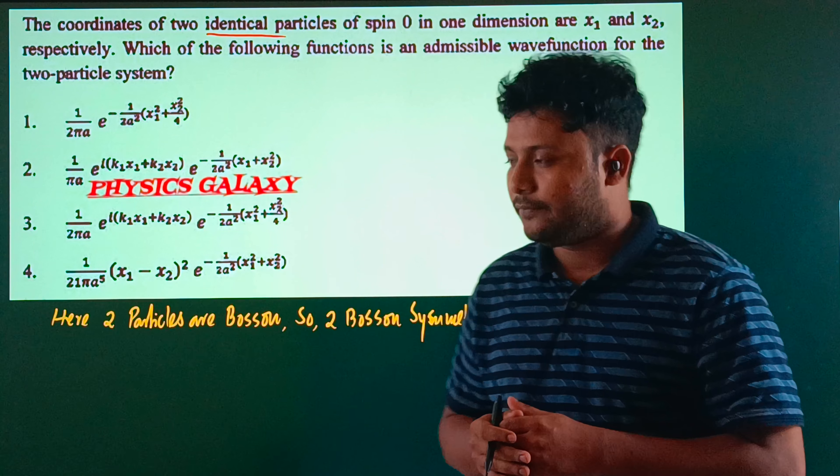Boson wave functions must be symmetric, so the two-boson combined system should be symmetric. Options 1, 2, and 3 are all symmetric. Now let's check option 4: ψ(x1,x2) = 1/(21πa³) (x1-x2)² exp[-(x1²+x2²)/(2a²)].